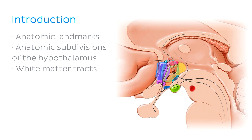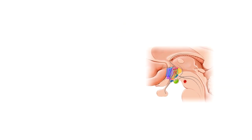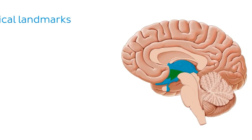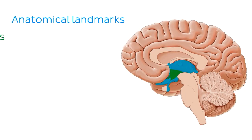And finally, later on, we'll explore some basic information on the white matter tracts associated with the region of the hypothalamus. So let's begin our discussion of the landmarks in and around the hypothalamus, which will help you better localize the region of the hypothalamus when looking at radiology pictures or gross specimens.